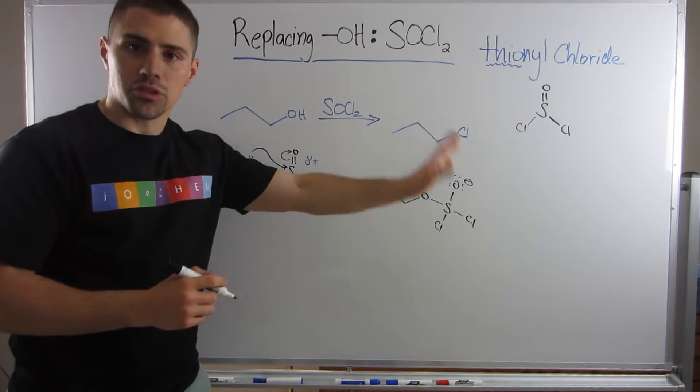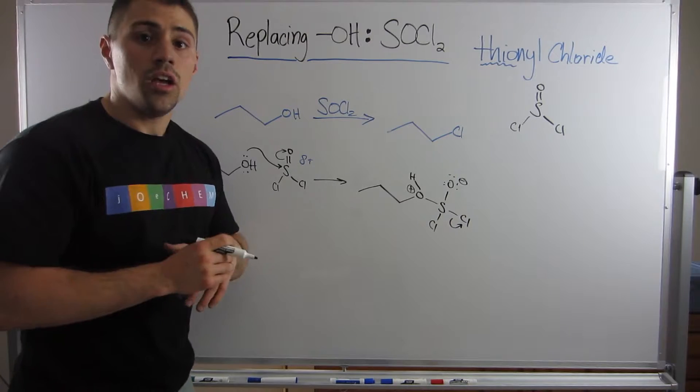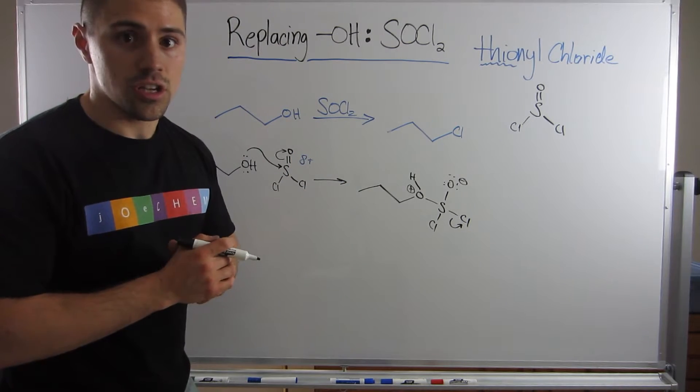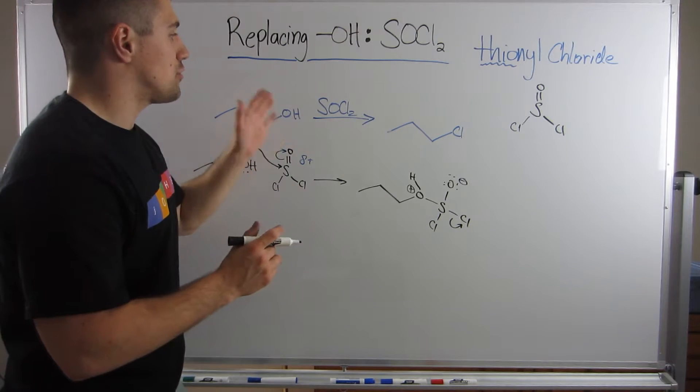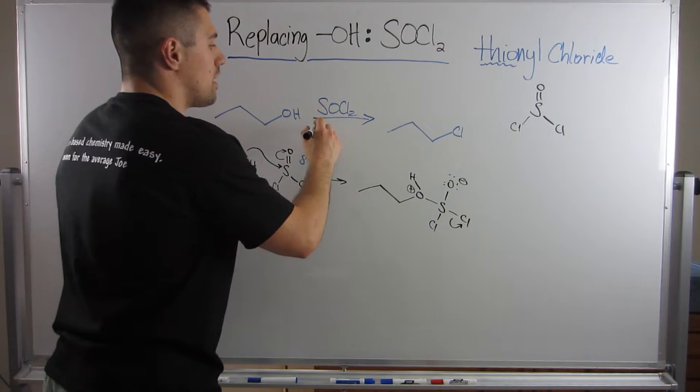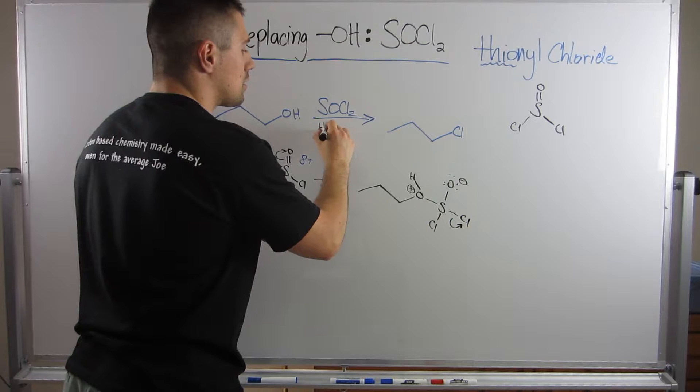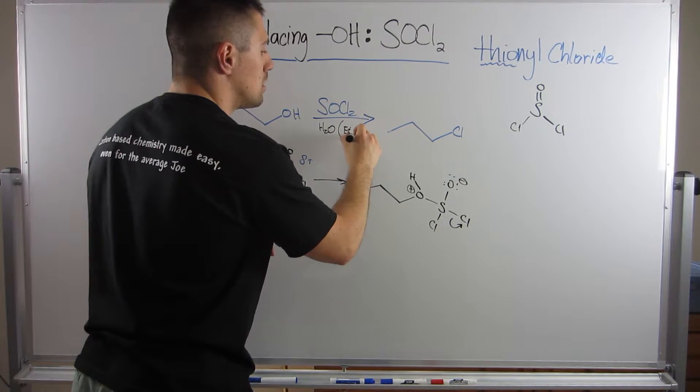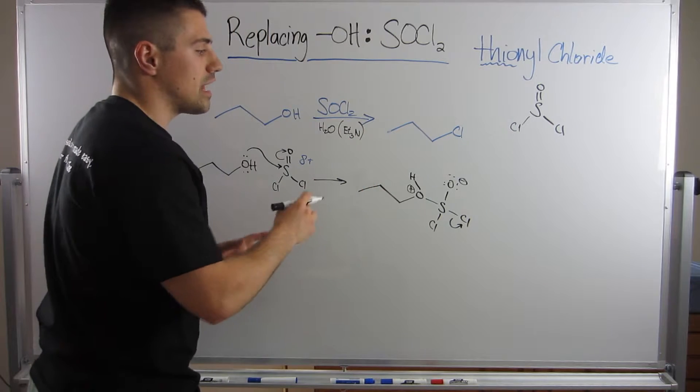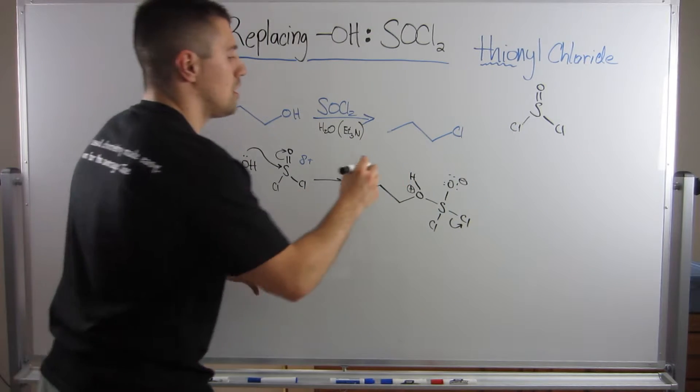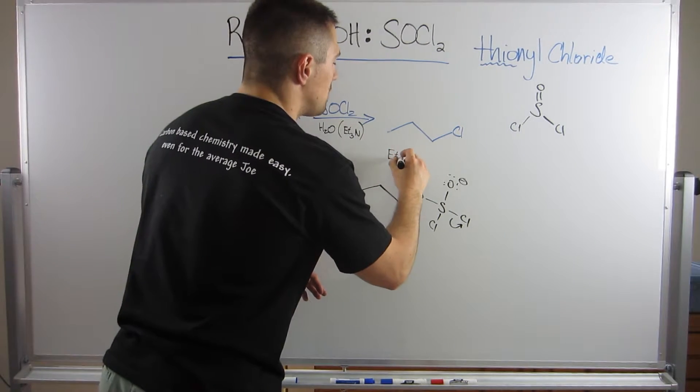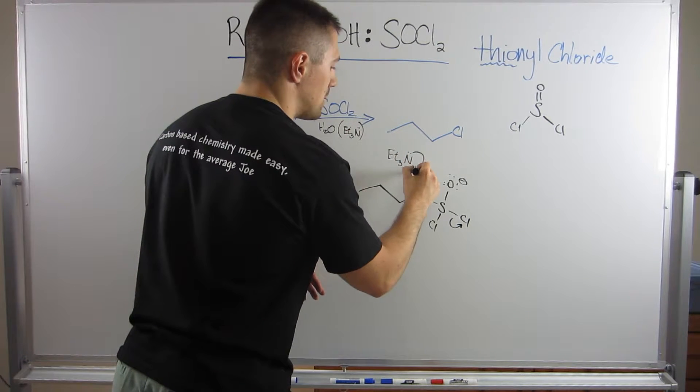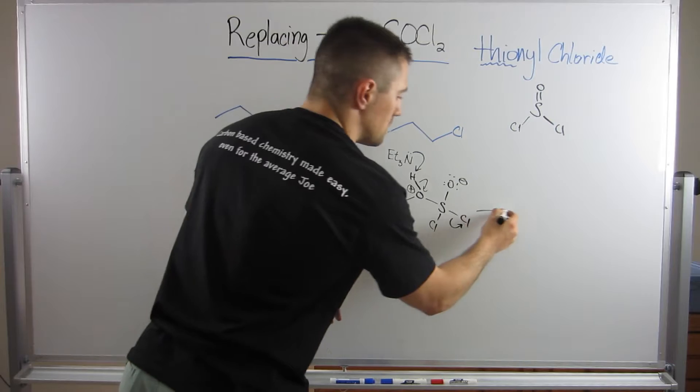So we started neutral, technically we're still overall neutral. So what I'm going to do next is that oxygen is not a big fan of that positive charge. We need to get rid of that. And I actually forgot, sometimes people will put either a water here, or more commonly what you'll see is a triethylamine. Something around that is going to help deprotonate that oxygen. So let's just say we have the triethylamine around, nitrogen has that one lone pair, he'll grab the H, and now oxygen is deprotonated.